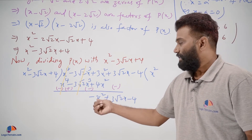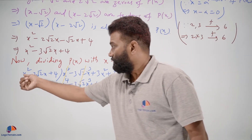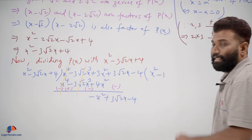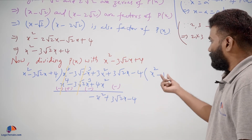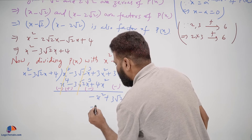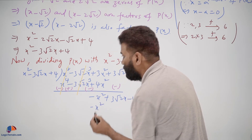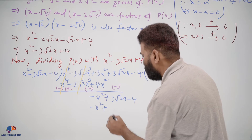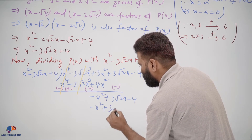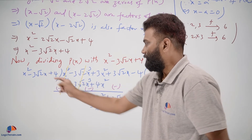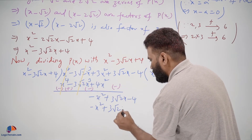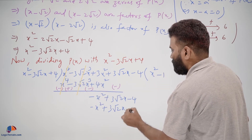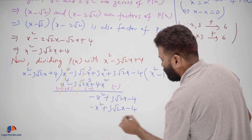Now we need minus x squared here, so we multiply by negative 1. Negative 1 times x squared gives minus x squared, negative 1 times minus 3 square root 2 x gives plus 3 square root 2 x, and negative 1 times 4 gives minus 4. After subtracting, these cancel and we obtain the quotient.